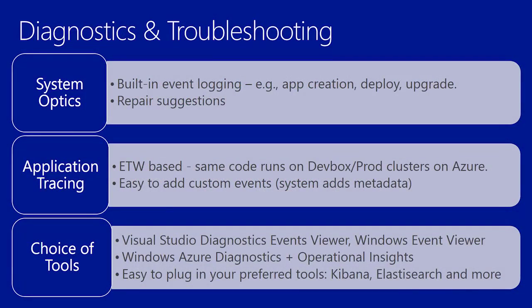Let's talk about the diagnostic capabilities offered in Service Fabric. In order to help diagnose your application and troubleshoot what went wrong in your live service, Service Fabric offers a lot of powerful primitives. It provides a variety of built-in system events — all important events such as app creation, deployment, and upgrades are always logged. It also provides repair suggestions in case something goes wrong. You can add custom ETW events to have enhanced monitoring or diagnostic capabilities specific to your application.